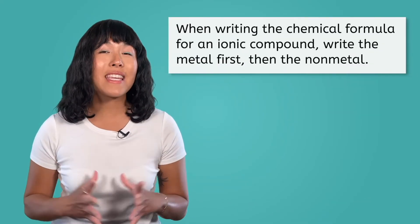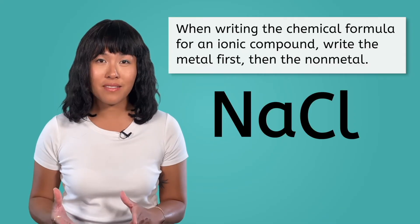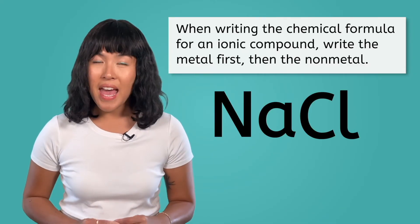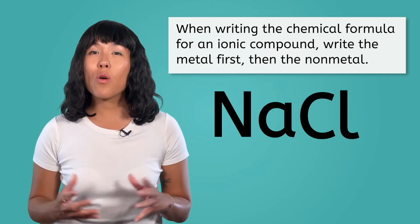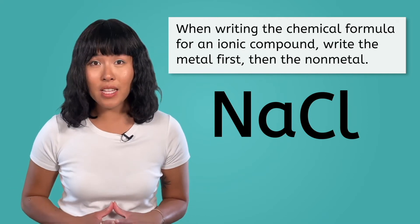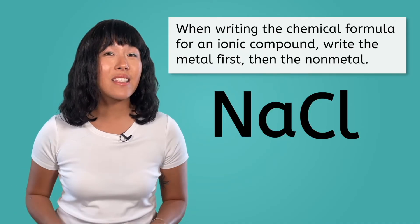To write the chemical formula for this compound, you would write the element symbol for the metal, in this case, sodium, then the element symbol for the non-metal, chlorine. Since we only used one atom of each element, we do not write any subscripts.